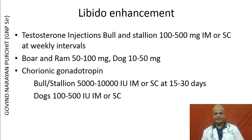Libido enhancement in males can be done by injections of the male hormone testosterone. Bulls and stallions can be given 100 to 500 mg intramuscular or subcutaneous at weekly intervals. Boars and rams can receive 50 to 100 mg, and dogs should receive 10 to 50 mg of testosterone injected intramuscular or subcutaneously at weekly intervals.